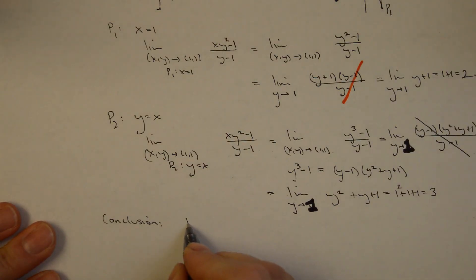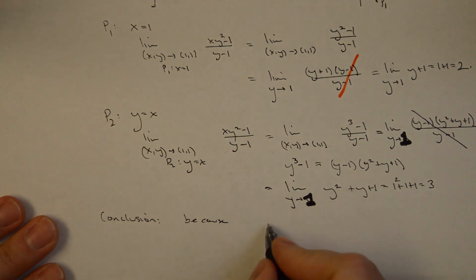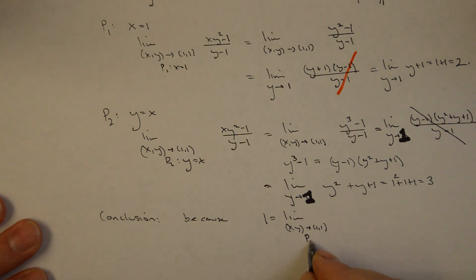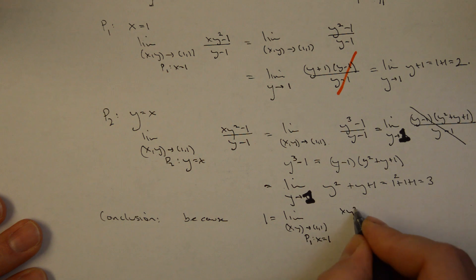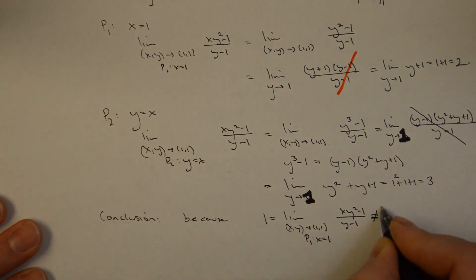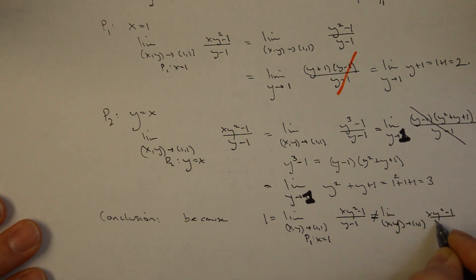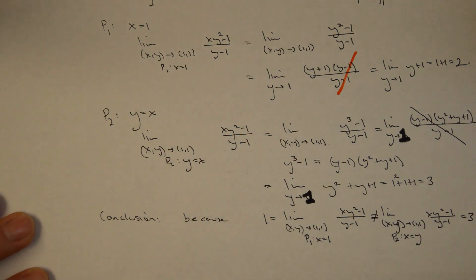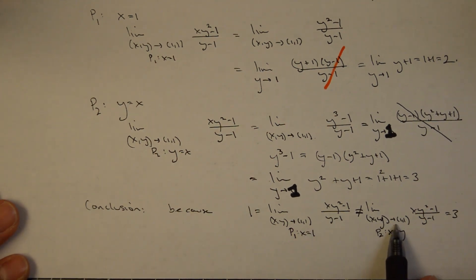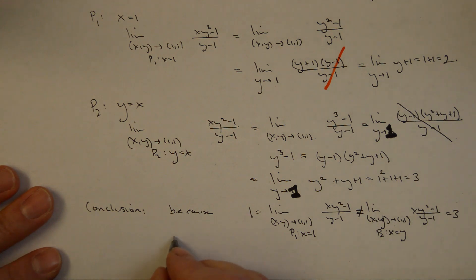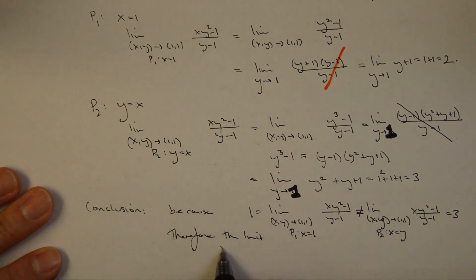We can now conclude: the limit along path 1 (x=1) equals 2, which does not equal the limit along path 2 (y=x), which equals 3. Since we found two different paths giving two different values, by the two-path test the limit does not exist.